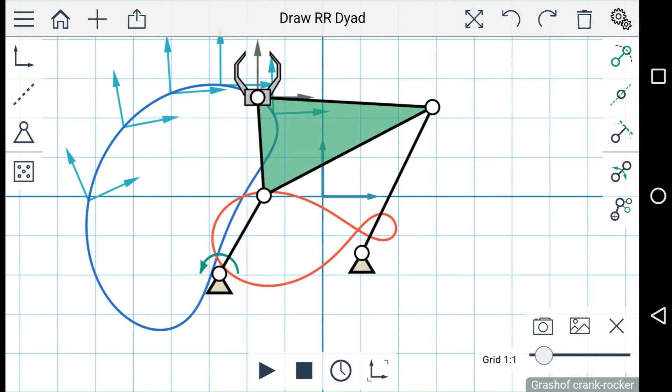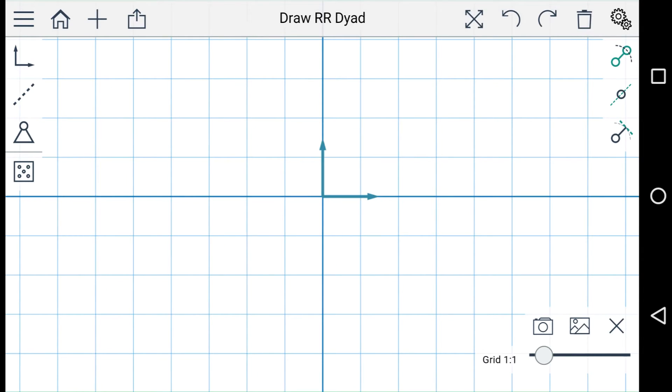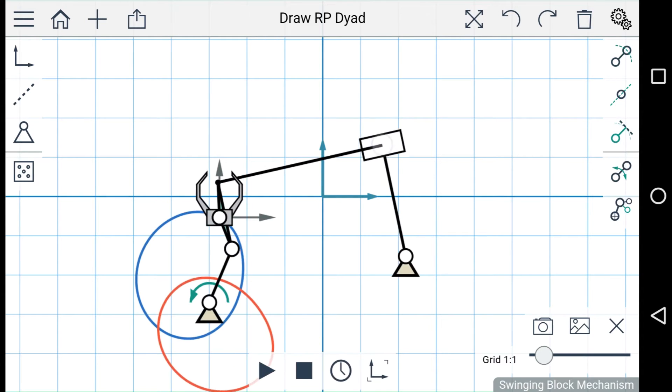Let's delete this linkage by pressing the delete button at the top. You can create different types of linkages with different dyads. So using an RR dyad and an RP dyad, you can create an RRPR linkage.